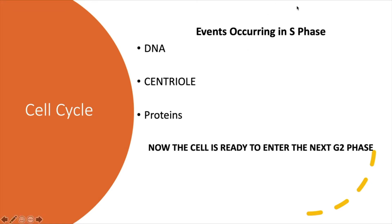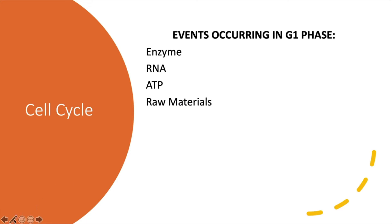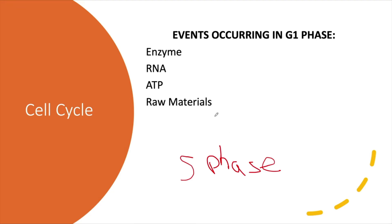When all this is done and the cell is ready to enter the next phase — S phase — there's a G1/S checkpoint. If the cell has gotten big and all these preparations are in place, we end up getting a cyclin-CDK complex that comes into play and pushes the cell into S phase.